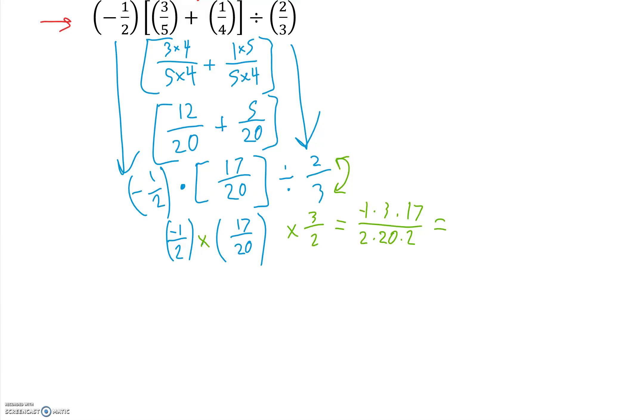2 times 20 is 40. 2 times 40 is 80 for the bottom denominator. Negative 1 times 3 is negative 3 times 17. I'll have to do this step by step. So negative 30 and negative 21. We add those together. Negative 51. We have negative 51 over 80. That is our final answer.